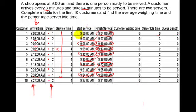Server 1 starts serving at 9:00, so there's no idle time at all. Server 2 starts serving at 9:03, so they've been waiting around for 3 minutes. Server 1 finishes at 9:04 and their next job is at 9:06, so there's a 2-minute gap. Server 2 finishes at 9:07 and their next job is at 9:09 — again 2 minutes. So it goes 2 minutes of idle time all the way down for both servers.